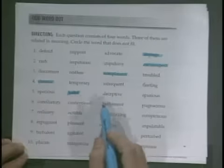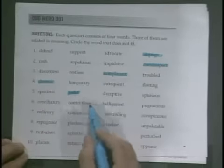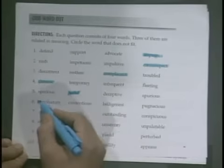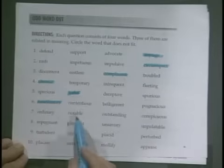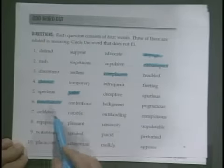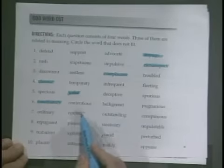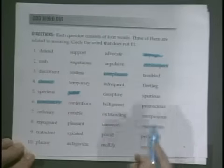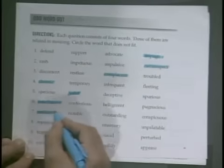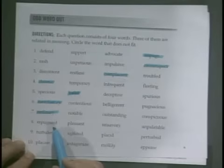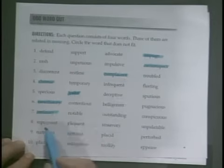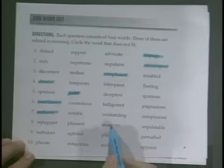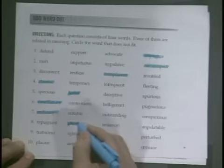Conciliatory, contentious, belligerent — belligerent is the same as contentious; they mean ready to fight, so does pugnacious; so we want conciliatory there. Ordinary, notable — if it's notable then it's not ordinary; if it's outstanding it's notable; if it's conspicuous it's also outstanding; we need ordinary, something ordinary does not stand out. Repugnant, pleasant — these are opposites; unsavory is the same as repugnant; unpalatable is the same as unsavory; so we want pleasant for that one.